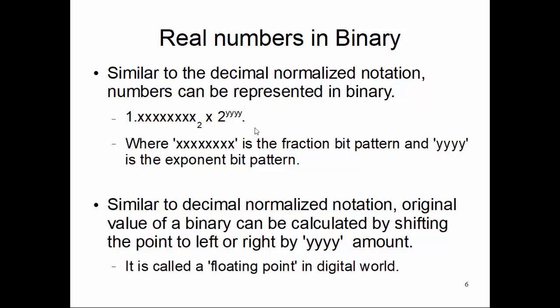Just as with decimal normalized notation, the original binary value can be recovered by shifting the point left or right by the yyy amount. In the context of binary values, this point is not called a decimal point — it is called a floating point. This is the origin of the data type 'float' and 'double' in high-level programming languages.